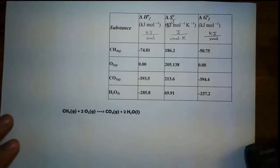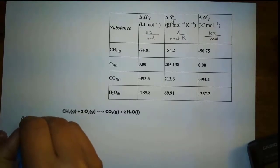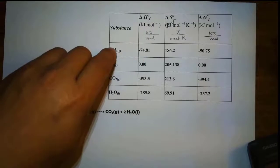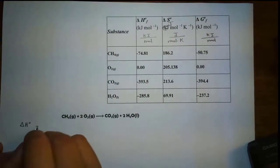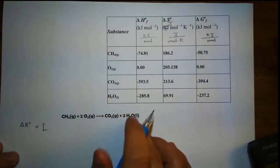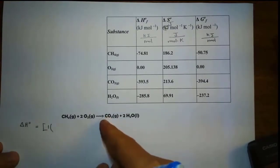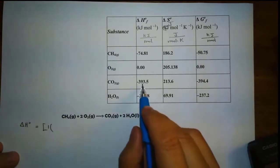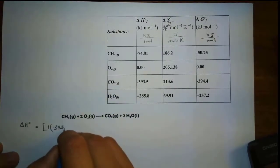Let's solve for delta H again. Delta H is standard formation. Notice this is the formation of a substance, but this is the delta H of the whole entire reaction. Again, we take the sum of the product. Here we have carbon dioxide and water — one mole of carbon dioxide because there's no coefficient. The value for CO2 is negative 393.5.